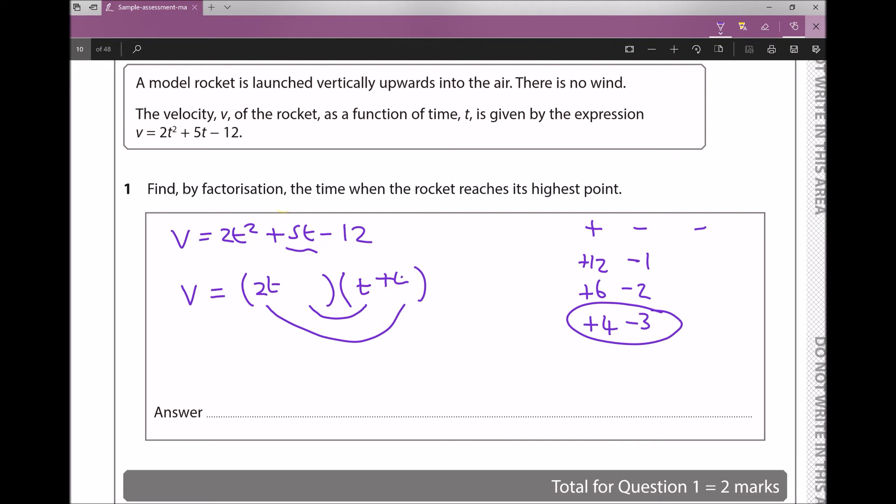If we put +4 in our right-hand bracket and -3 in our left-hand bracket, when we multiply that out we'll get v = 2t² - 3t + 8t - 12. We can simplify that further, which gives us v = 2t² + 5t - 12, which was what we originally started with.